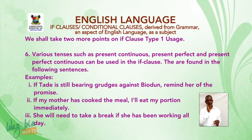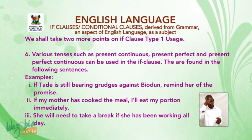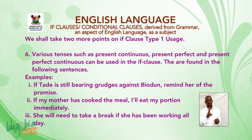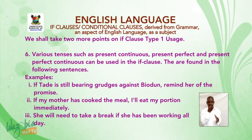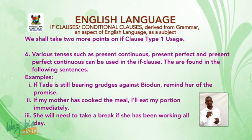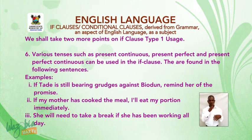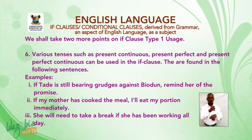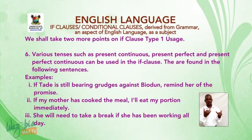Examples: one — 'If Tade is still bearing grudges against Biodun, remind her of the promise' (present continuous); two — 'If my mother has cooked the meal, I'll eat my portion immediately' (present perfect); three — 'She will need to take a break if she has been working all day' (present perfect continuous).